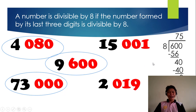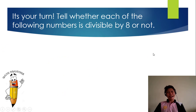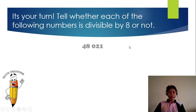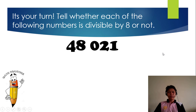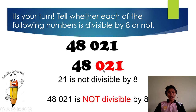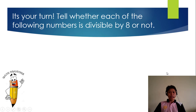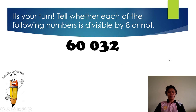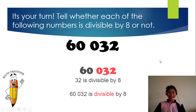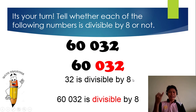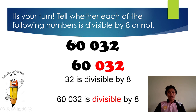Do you have any questions? Moving on. It's your turn. Tell whether each of the following numbers is divisible by 8 or not. I'll give you a few seconds before I reveal the answer, or you can pause the video if you want more time. Start. 48,021: 21 is not divisible by 8, therefore it is not divisible by 8. Next, 60,032: 32 is divisible by 8 — 8, 16, 24, 32 — so 60,032 is divisible by 8. Nice work.